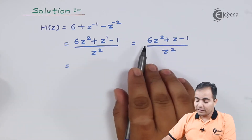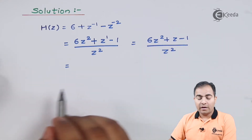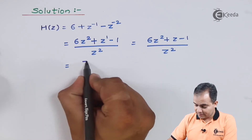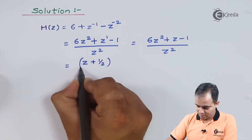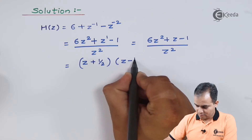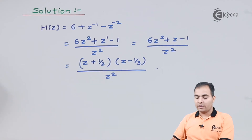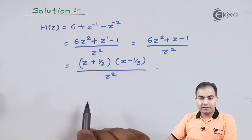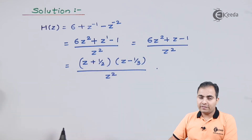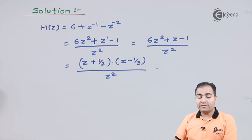Now we find the factors of the numerator — these factors give us the values of the zeros. The factors are (z + 1/2) and (z - 1/3), and in the denominator we have z². The numerator gives us the zeros and the denominator gives us the poles.